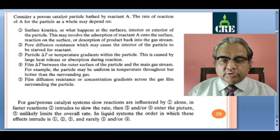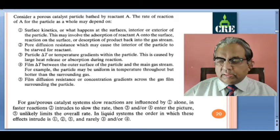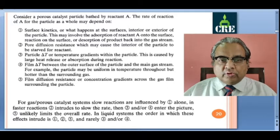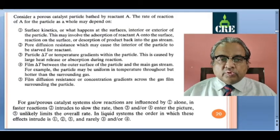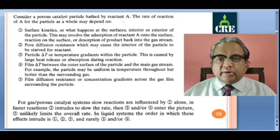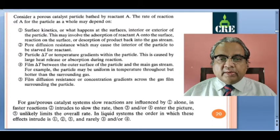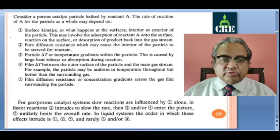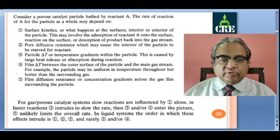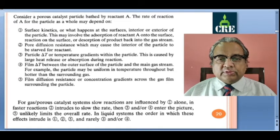Welcome once again to this lecture series in Chemical Reaction Engineering 2. Today we will see solid catalyzed reactions. We consider a porous catalyst particle bathed by the reactant A. The rate of reaction of A for the particle may depend on five factors: surface kinetics, pore diffusion resistance, particle delta T, film delta T, and film diffusion resistance.